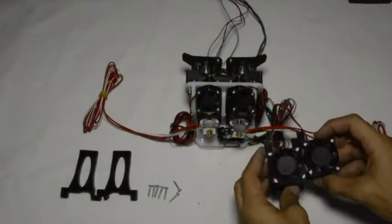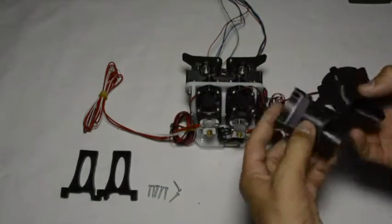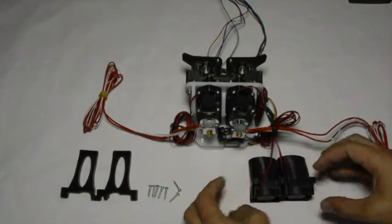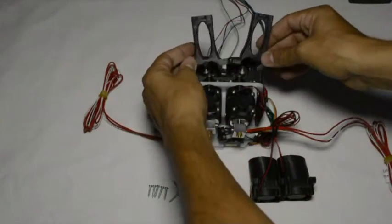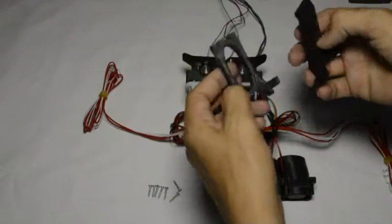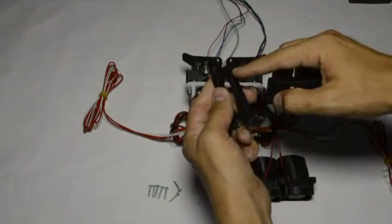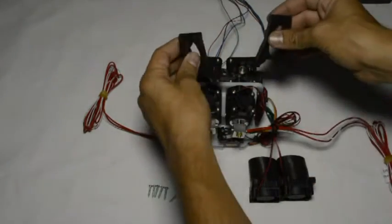Now this assembly looks like this. So the next step is to fix it to the fan brackets. You'll see that they are split in two. Because we will first mount these ducts to the brackets.